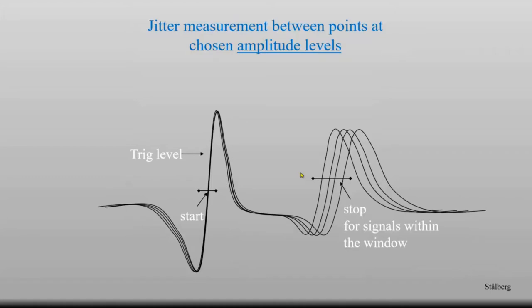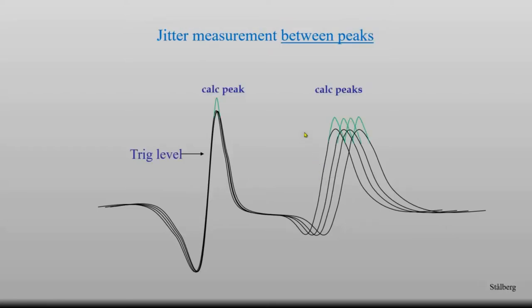To quantitate this we need to measure the time between the first and the second pulse. The original method used time windows: a starting point and then like a stopwatch, the measurement stops when the signal passes through the window. This technique is still used in some equipment. Another possibility is to measure between the peaks — between this peak and this peak — and for a simple signal, it gives exactly the same jitter value.